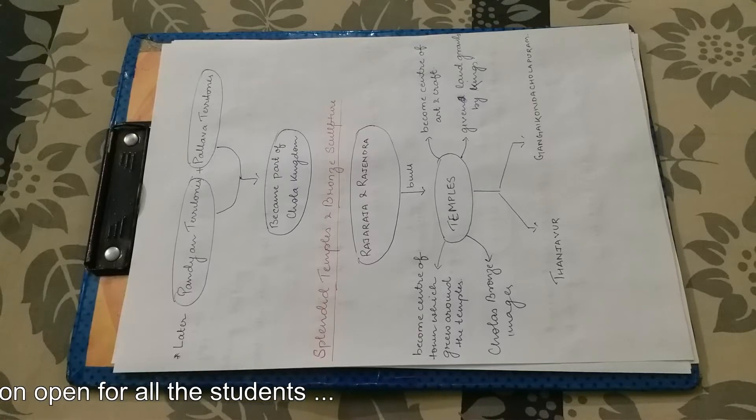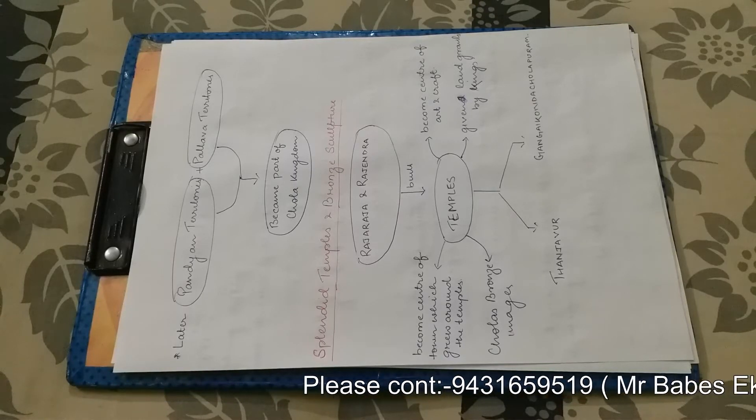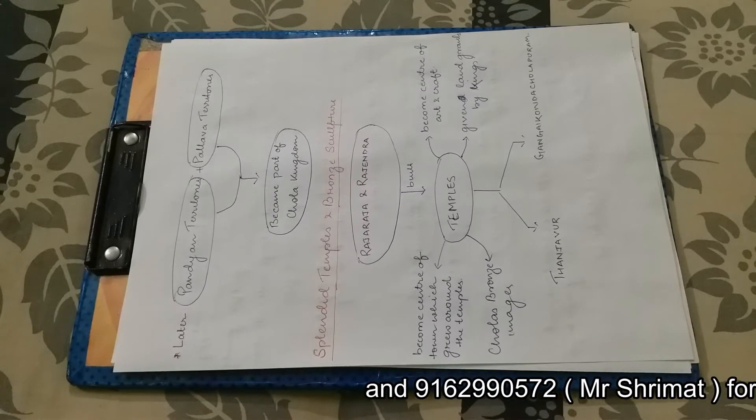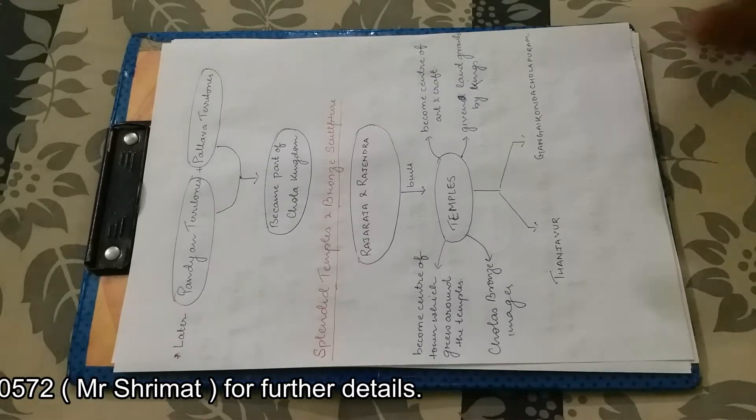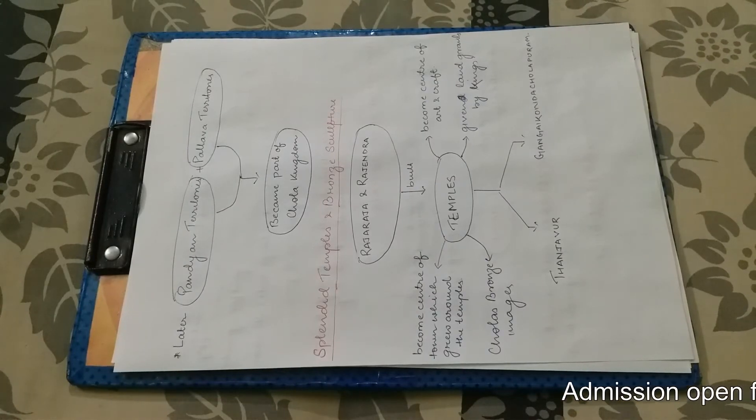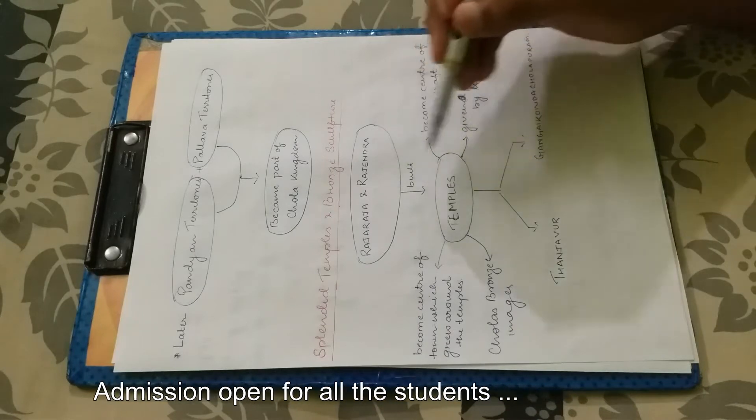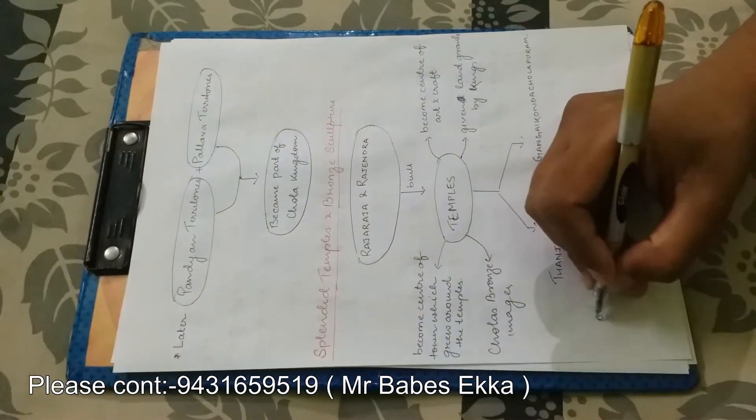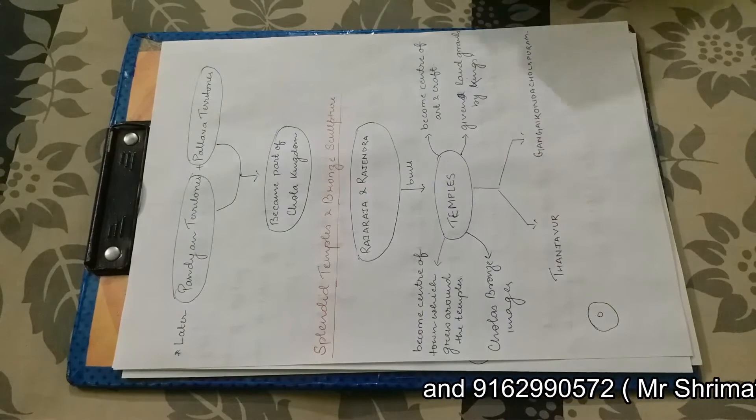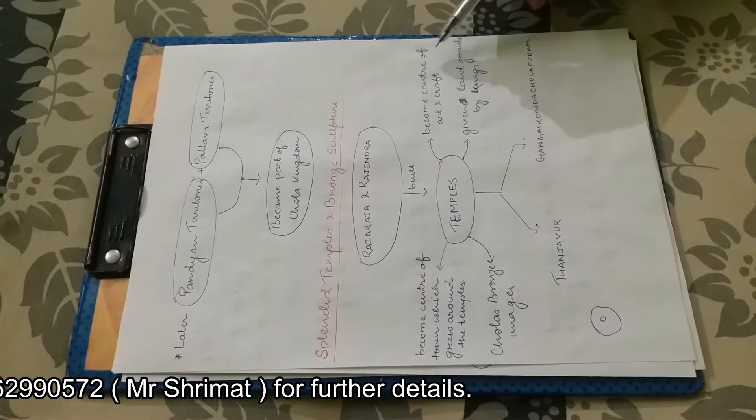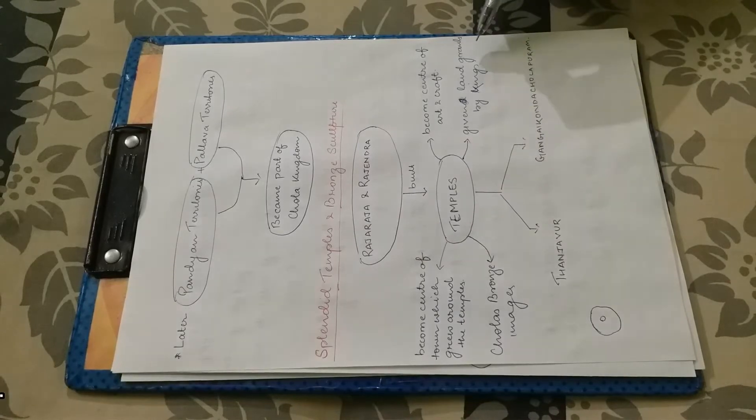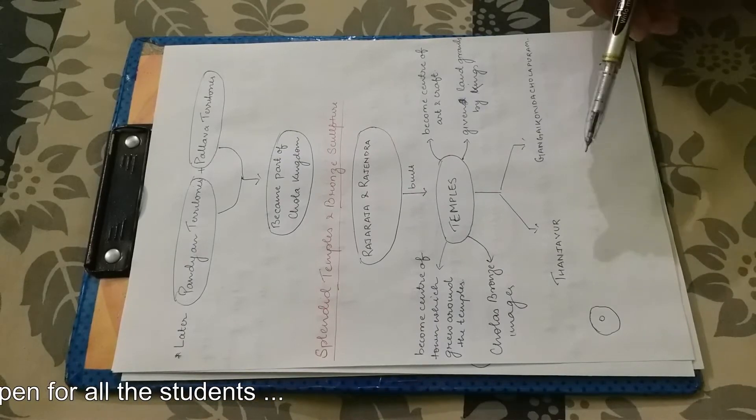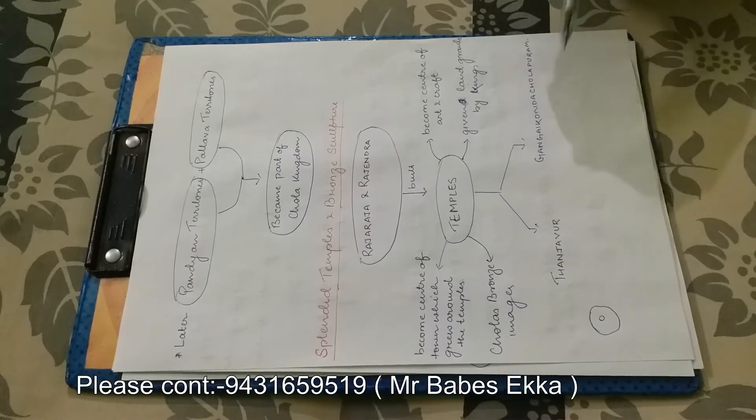Who built temples? What significance was the temple? How is the city built around the temple? How is Chola's bronze image worldwide famous? And what is the importance of arts and crafts? So if you look at this diagram, then you will see all the things in your mind. Raja Raja and Rajendra Chola built temples. The temples became the center of town which grew around the temples. Like if these are temples, then the temple was centered and the cities were built. In that way, many of the art and crafts were developed. And the kings gave temples land grants. And the Chola bronze image is very famous. You can see them on the temple. And the temples were built in Thanjavur and Gangai Konda Cholapuram.